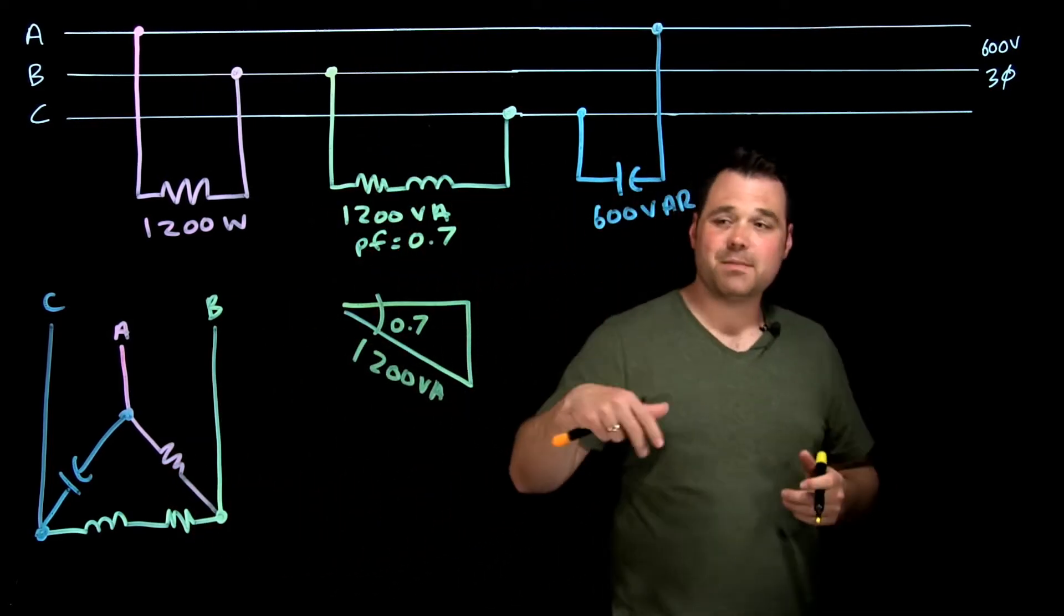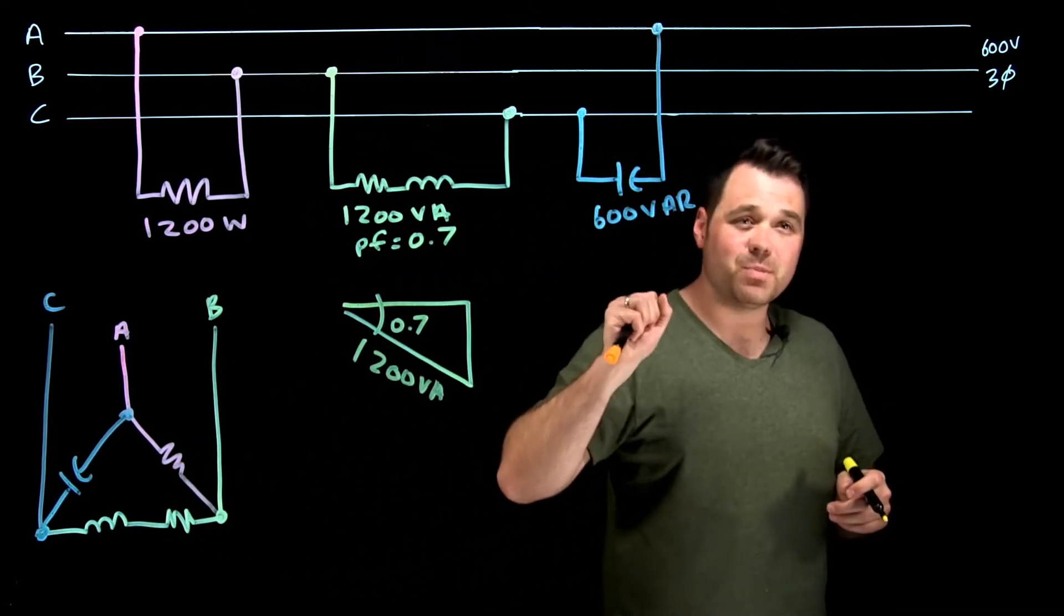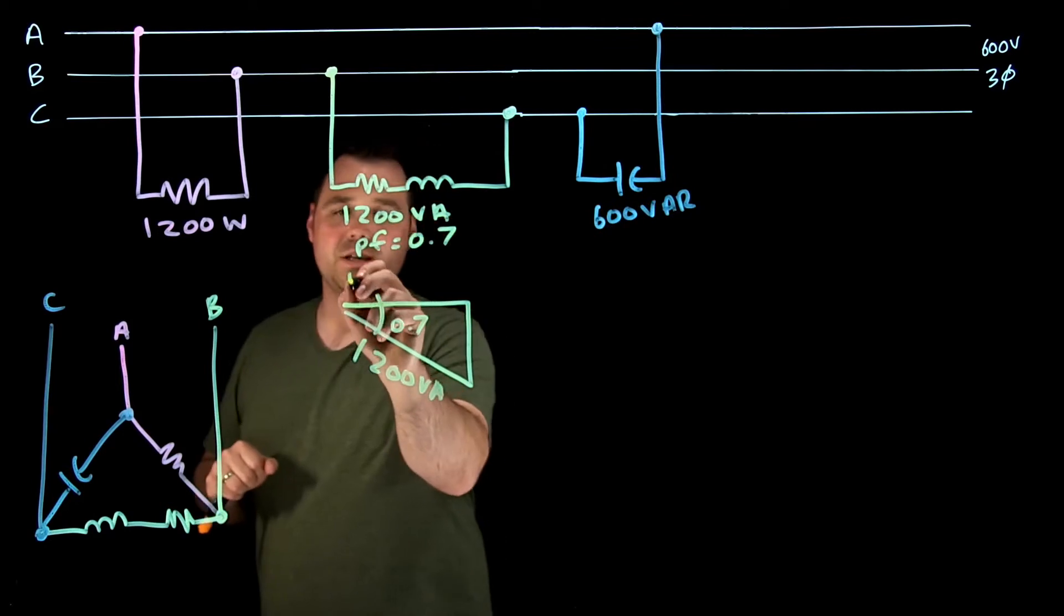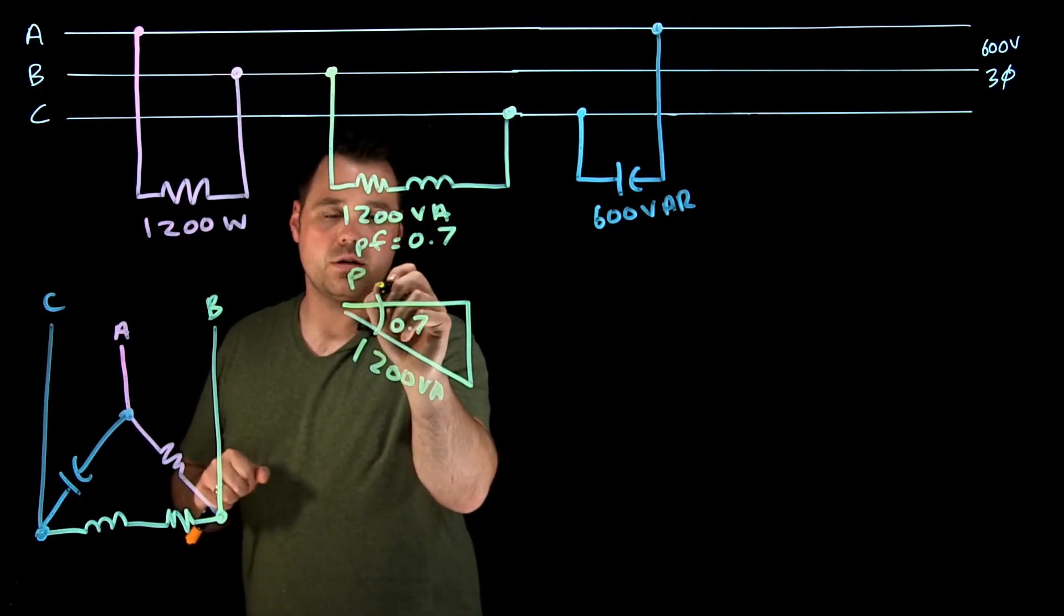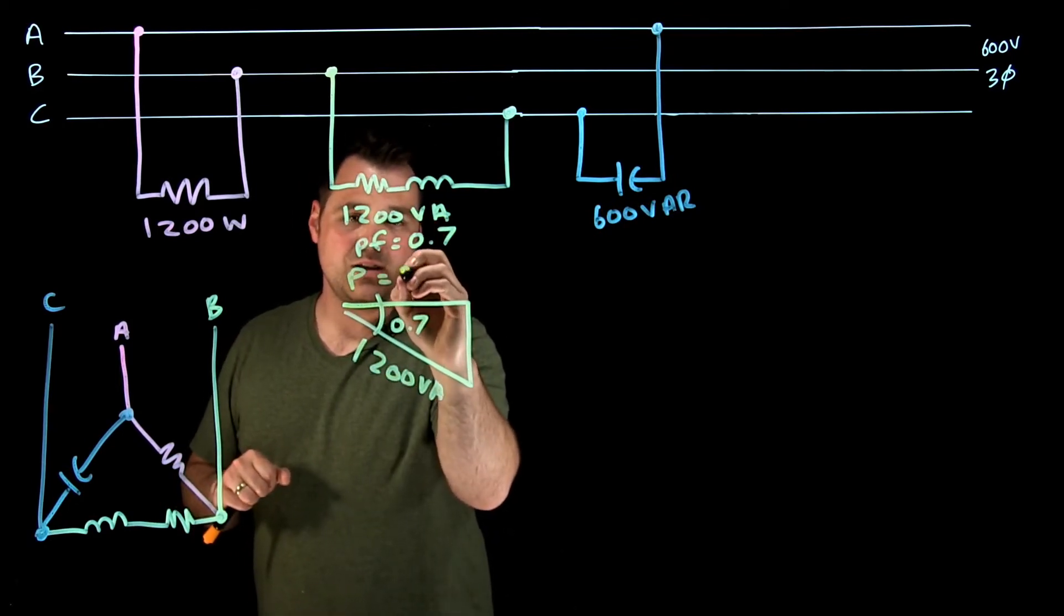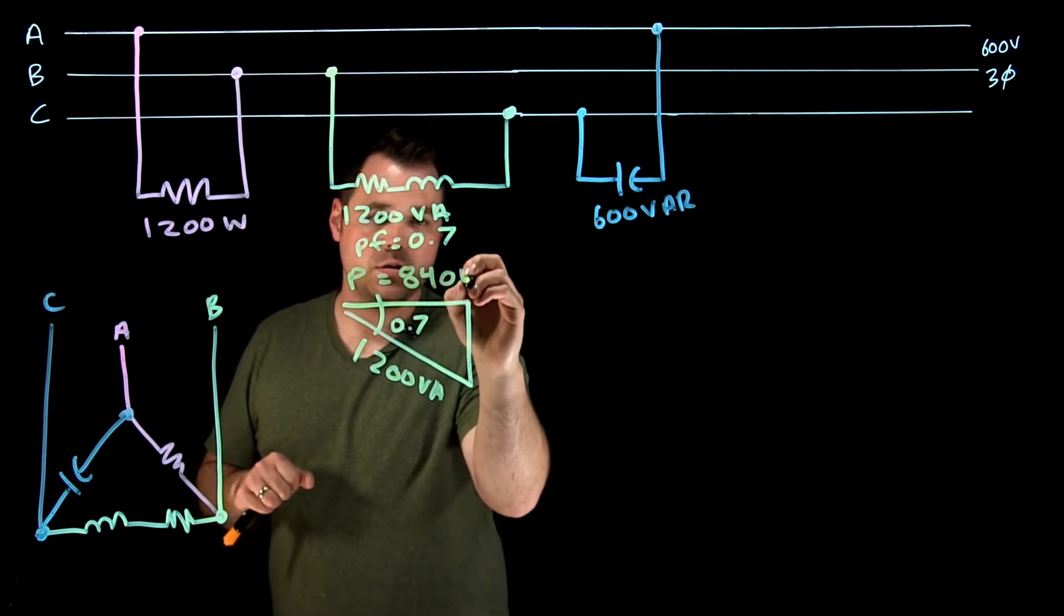What I'm going to do is take my 1200 VA, multiply it by my power factor, and that's going to give me the power here of 840 watts.